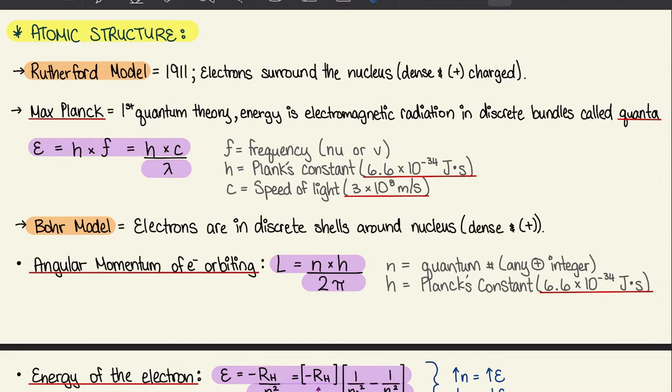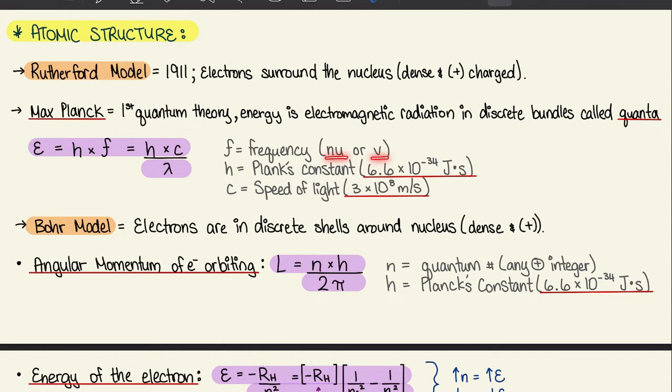We're going to jump to 1.3, which is atomic structure. We'll start with the Rutherford model, which illustrates that electrons surround the positively charged and dense nucleus. From that came the Max Planck theory — the first quantum theory — which states that energy is electromagnetic radiation in discrete bundles called quanta. This is represented by the equation E equals H times F, where H is Planck's constant (6.6 times 10 to the negative 34 joule-seconds) and F is frequency, which can be represented with nu or a lowercase v.